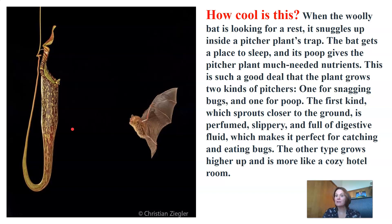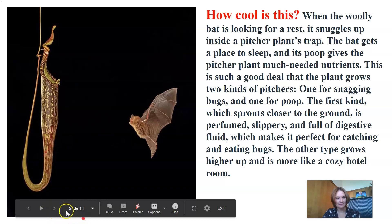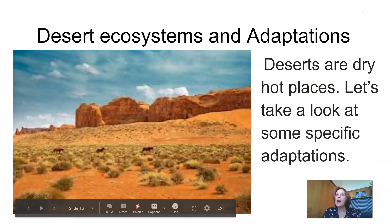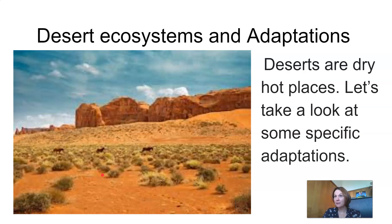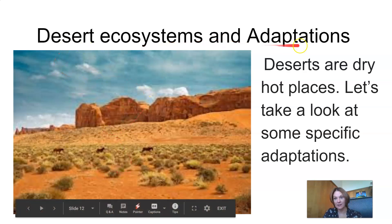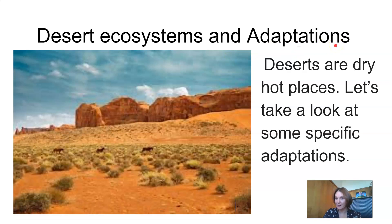The first kind, which sprouts closer to the ground, is perfumed and slippery and full of digestive fluid, making it perfect for catching and eating bugs. The other type grows higher up on the pitcher plant and is more like a cosy hotel room for the woolly bats. An adaptation can also be a behavioural adaptation affecting the way an organism acts. An example of a structural adaptation is the way that some plants have adapted to life in the desert, so we are now going to take a look at the desert ecosystem.